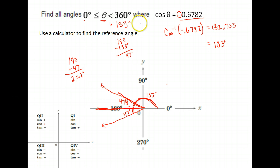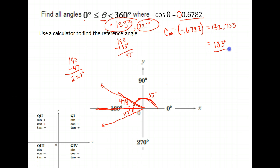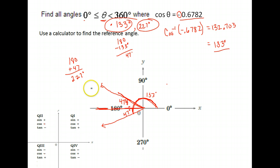So the two angles between 0 and 360 that have a cosine of negative 0.6782 are 133 and 227 degrees. You use your calculator to find the starting point, and then you use where the trig function is positive or negative to find where those angles are located.